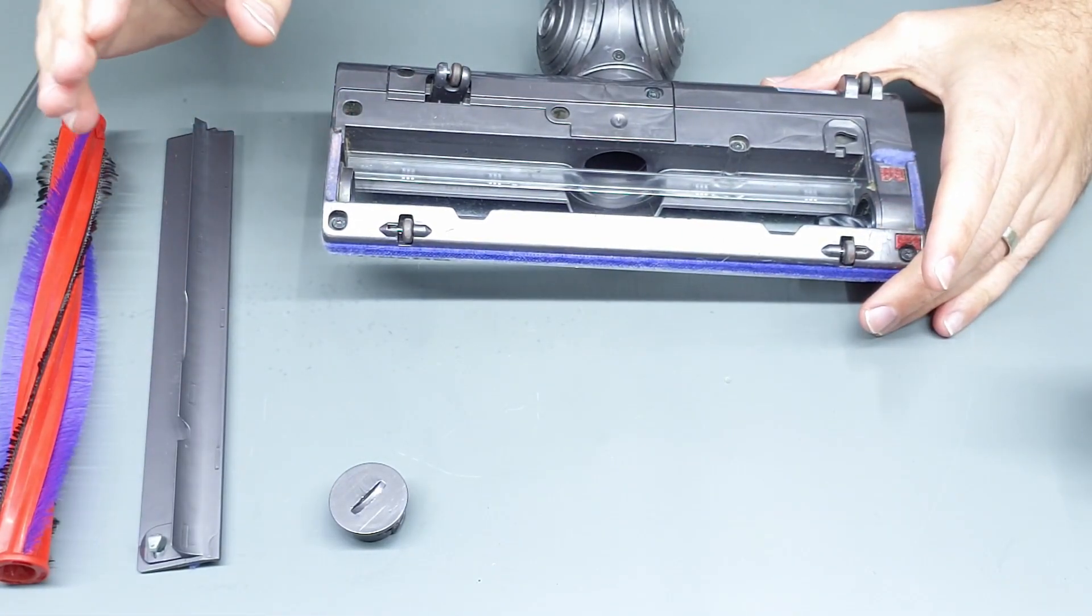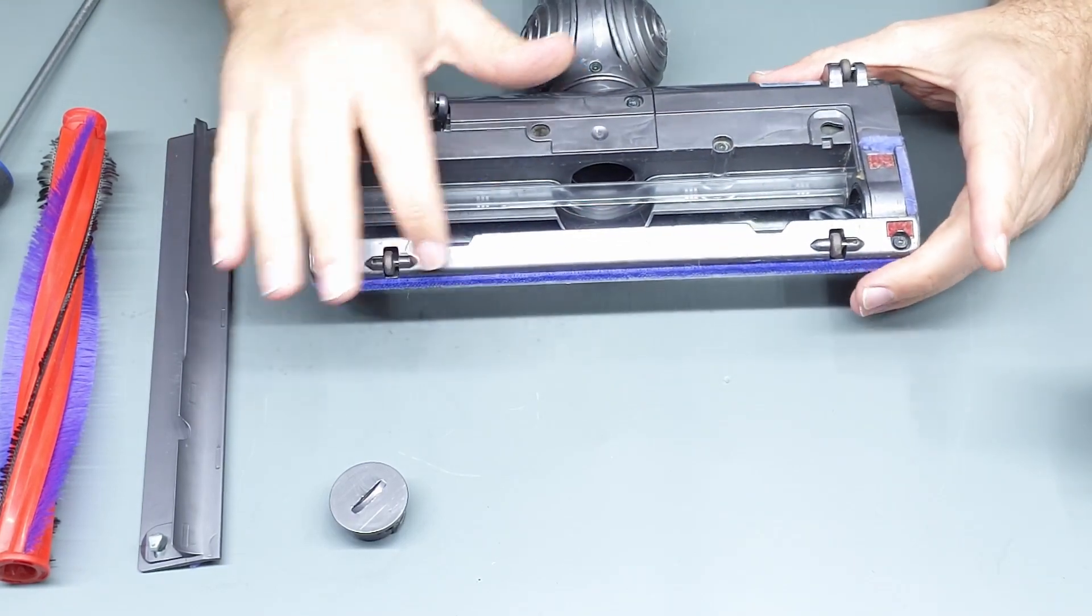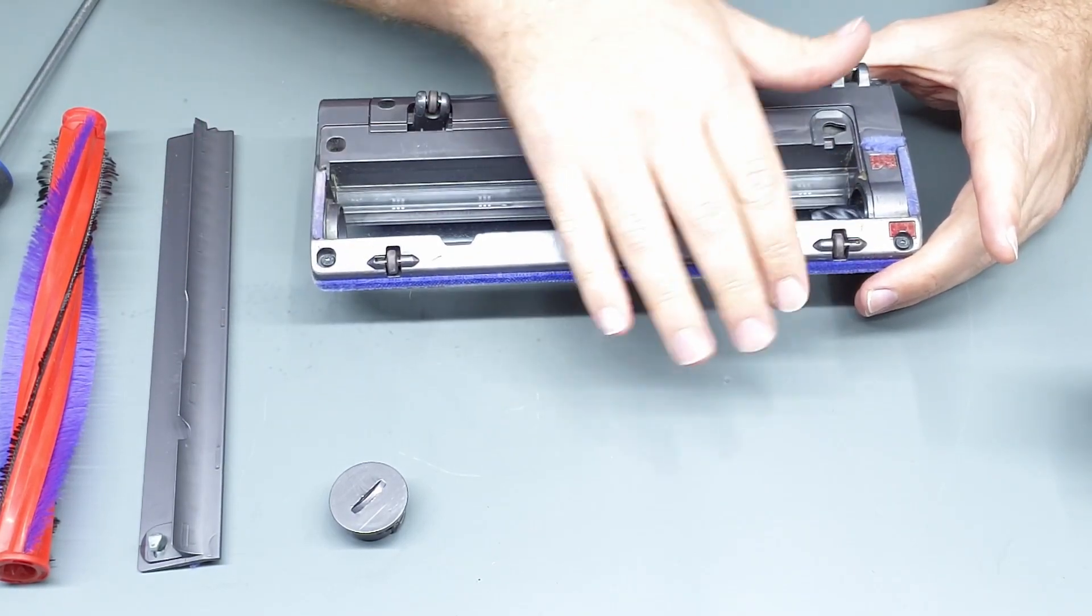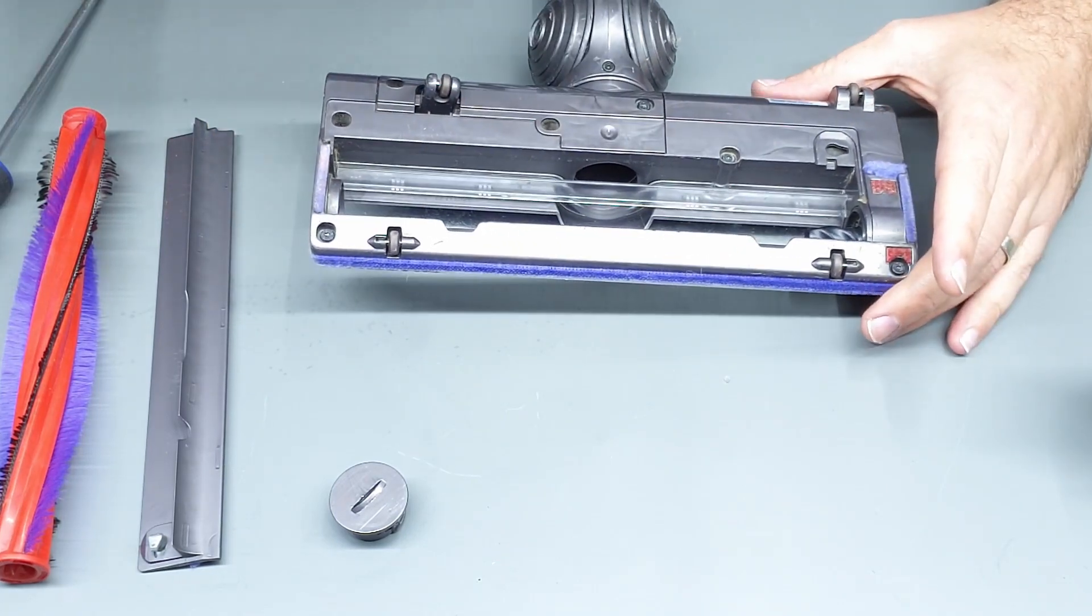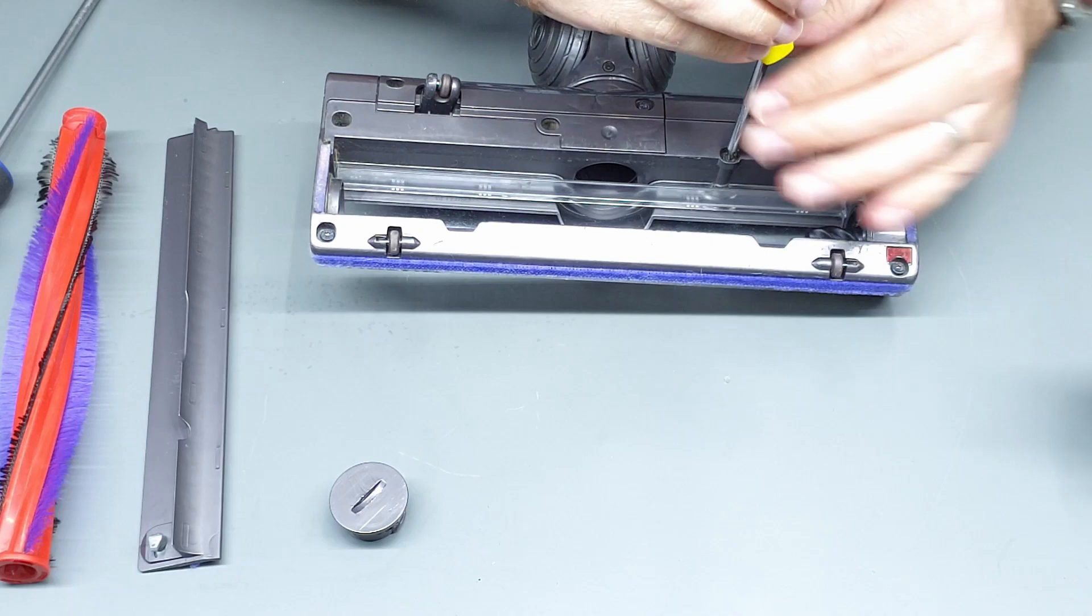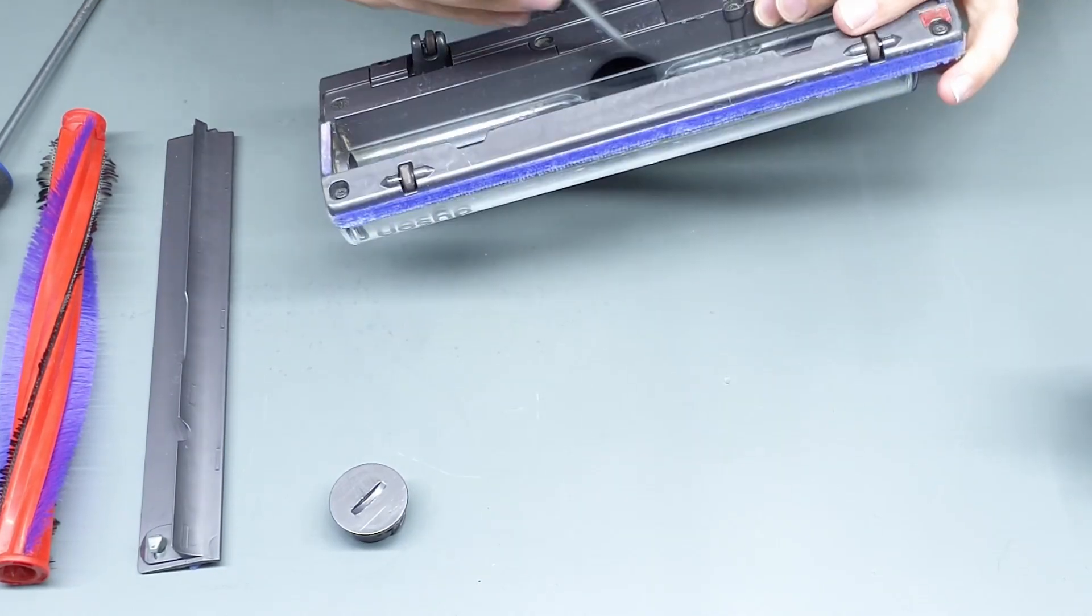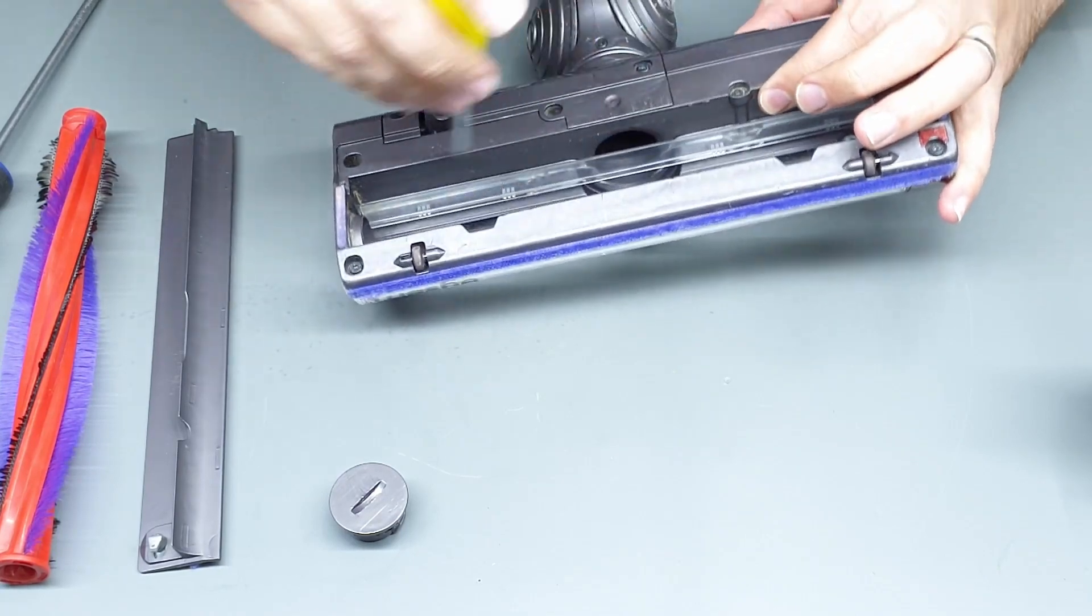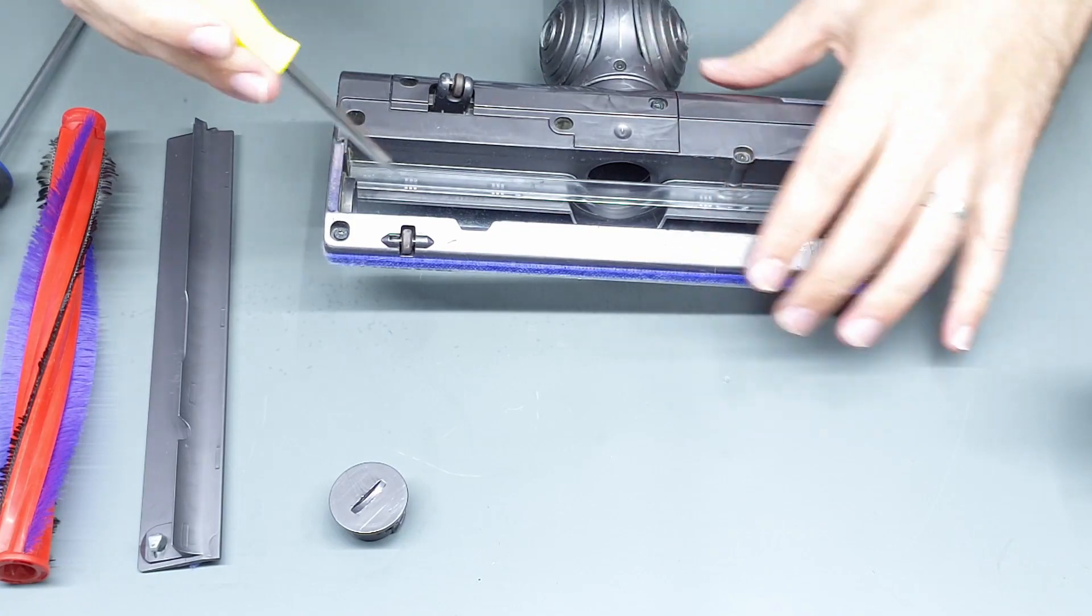I don't recommend submerging any of this in water because anything where there's screws or exposed metal will rust if you try and leave it in water for too long. But we can pull this out and give it more of a clean because a lot of dirt does get stuck back here as well which is hard to get to when you've still got all this case on.